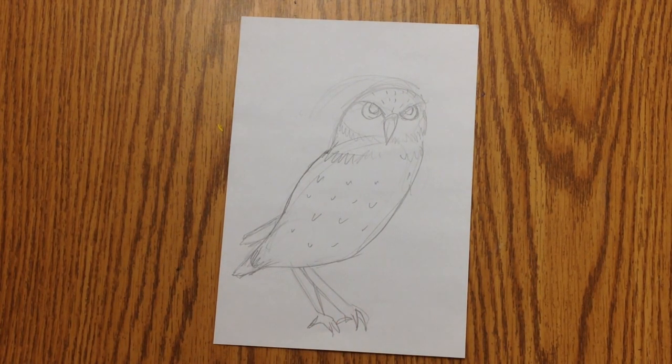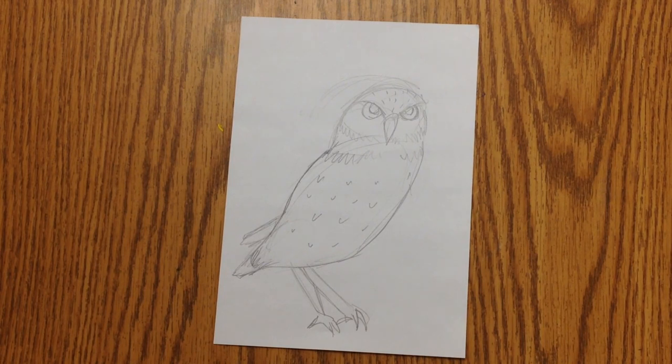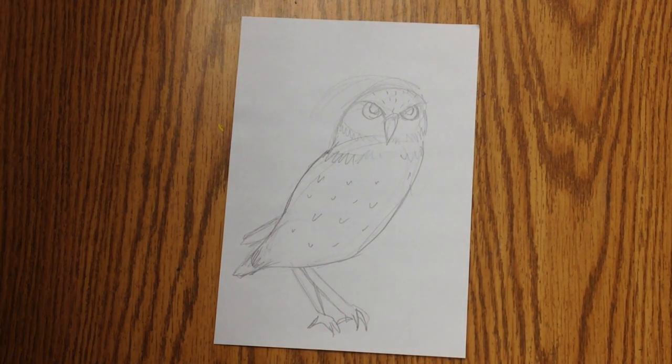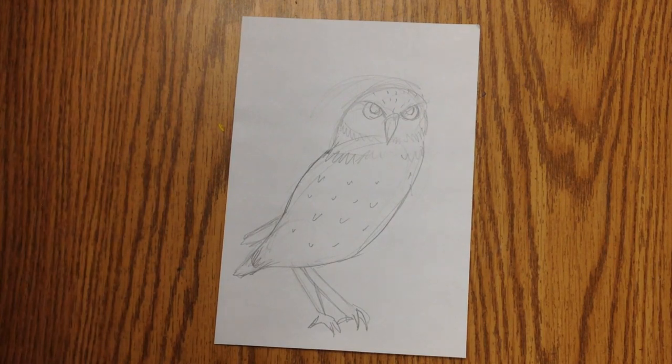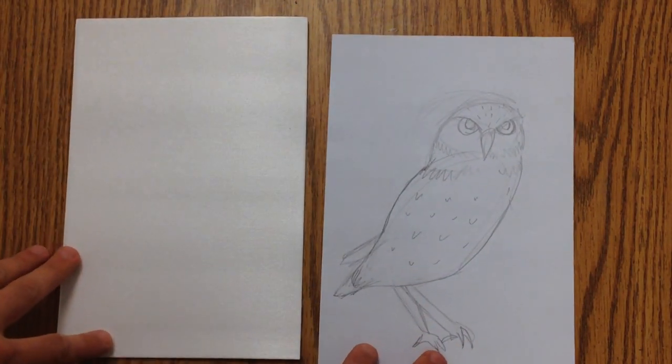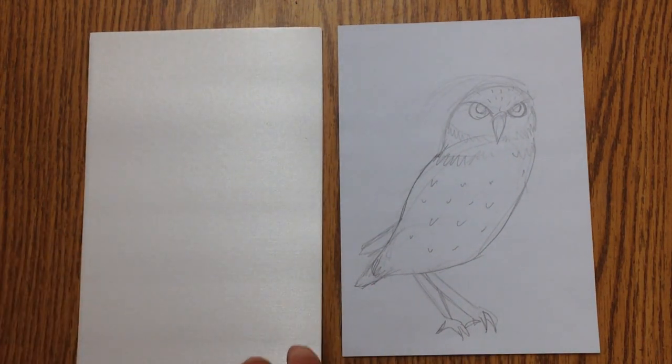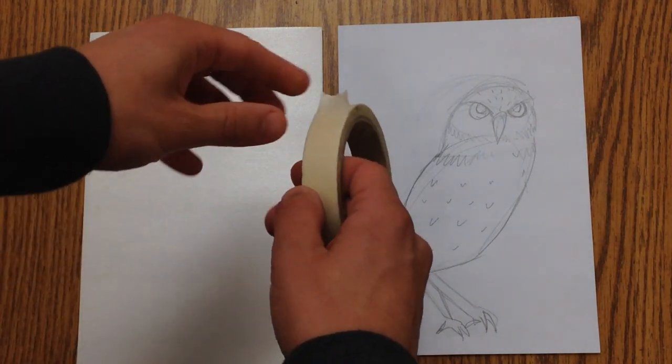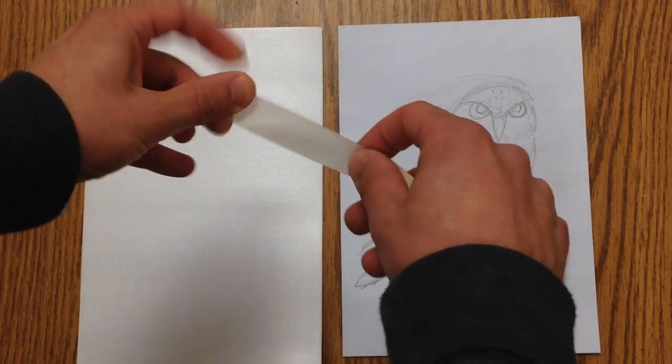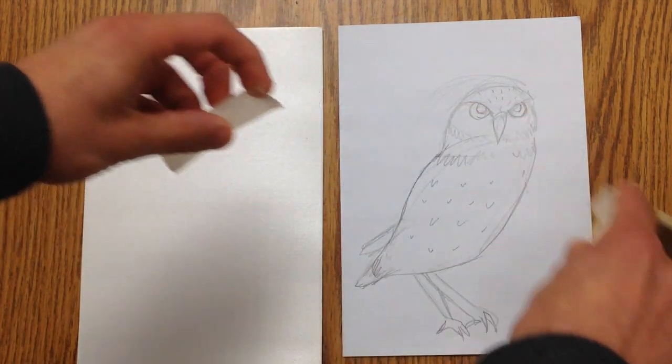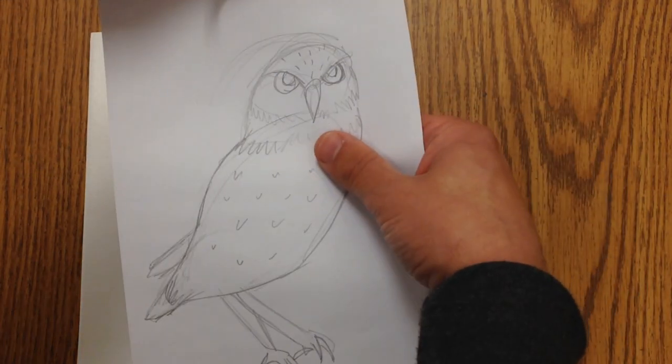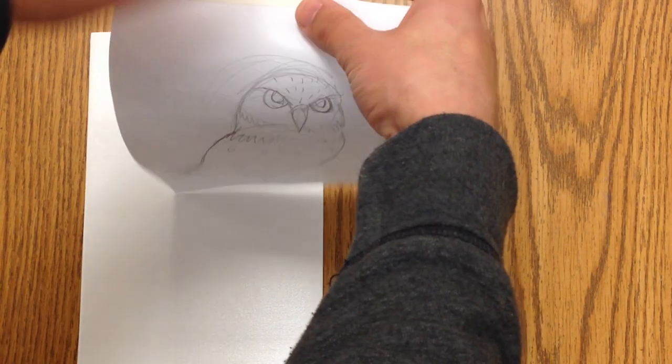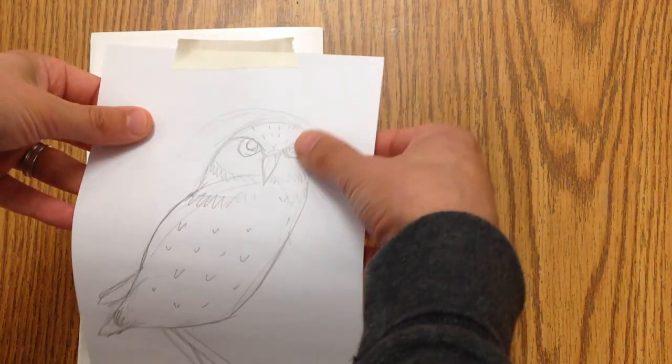Then what I'm going to do is take my printing plate, which is a sheet of styrofoam, and take a piece of tape. I'm going to pull this out and pull across. You want to have this go across the top of your paper. You don't want to go this way—it'll kind of swing.